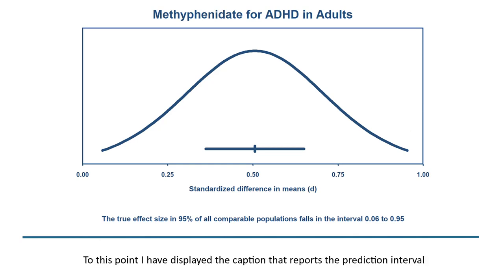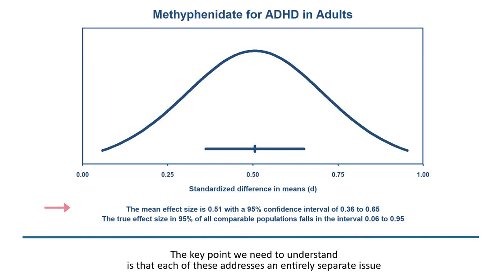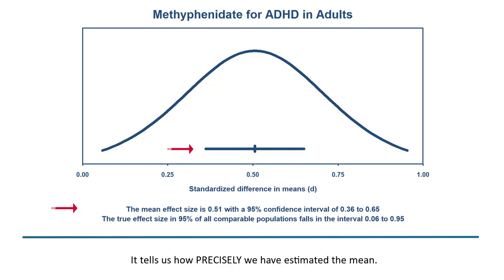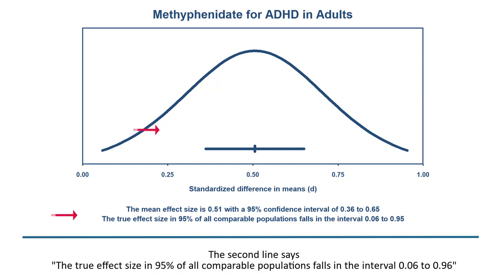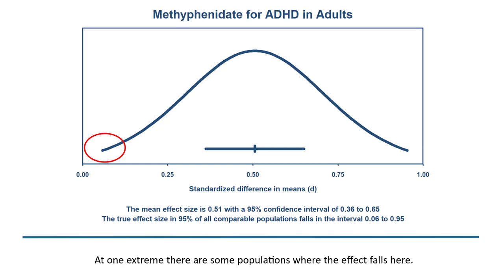The interval is intended to capture the true effect size in 95% of all comparable populations — some 2.5% will fall below this point and another 2.5% above. There are two captions: one reporting the prediction interval and one reporting the confidence interval. Each addresses an entirely separate issue. The confidence interval says the mean effect size is 0.51 with a 95% confidence interval of 0.36 to 0.65 — it is an index of precision, telling us how precisely we have estimated the mean.